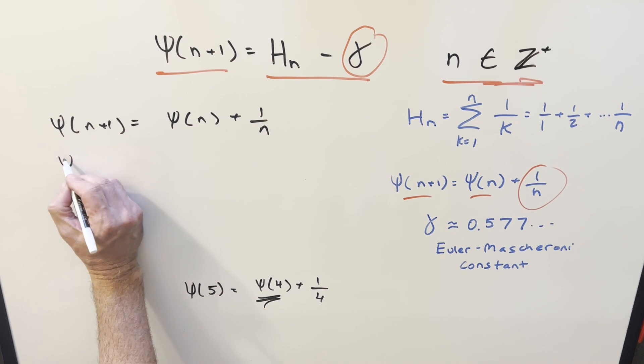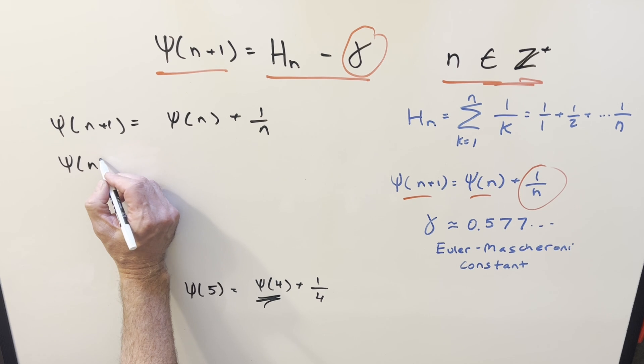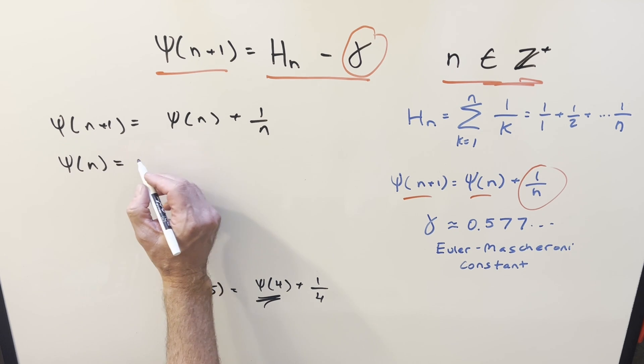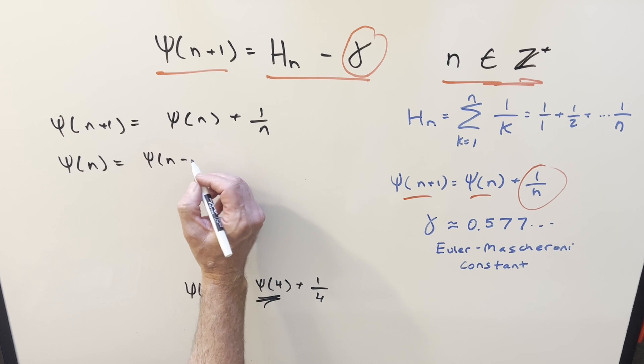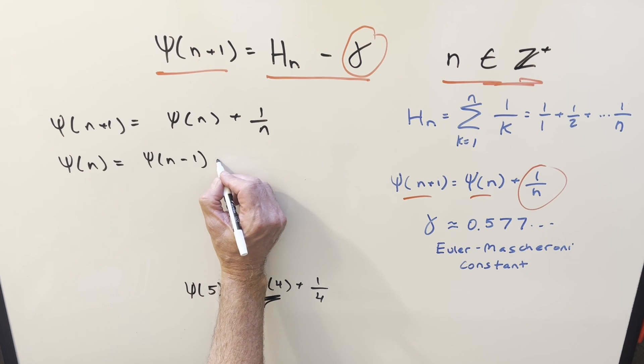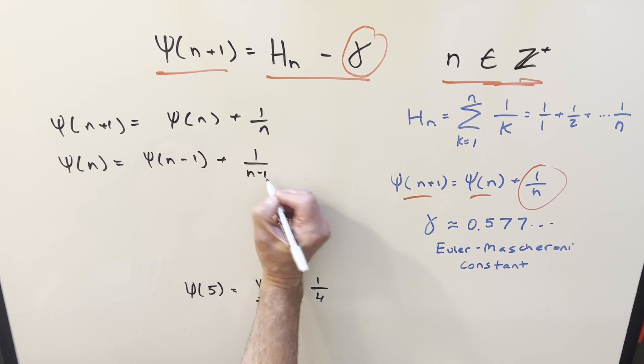Well, coming back to this, we can just kind of use it again for digamma of n using the same formula, reduce this by 1. This is going to be the same thing as digamma of n minus 1 plus 1 over n minus 1.